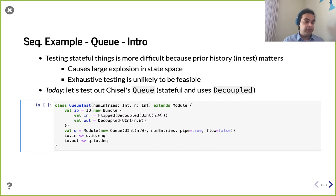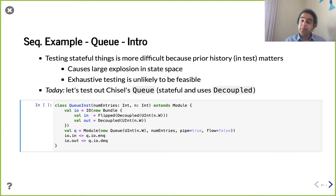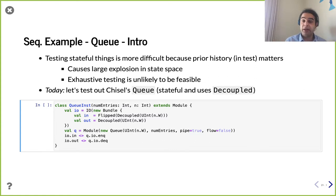This is a great model for us to look at because its functionality is well understood — things go into a queue and come out in the same order they went in. It's stateful, meaning it has registers. Additionally, it uses the decoupled interface, so we have a chance to look at how that plays into a test bench.